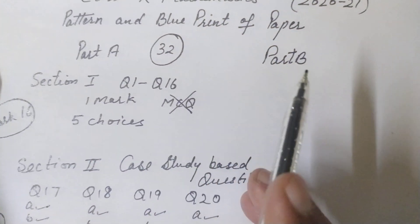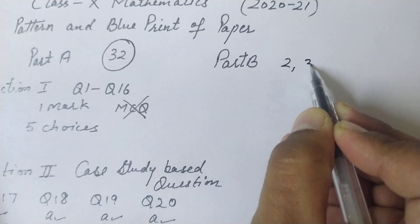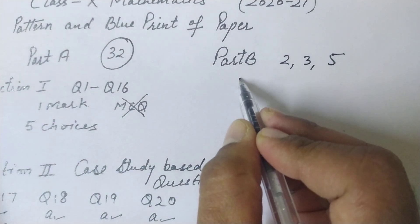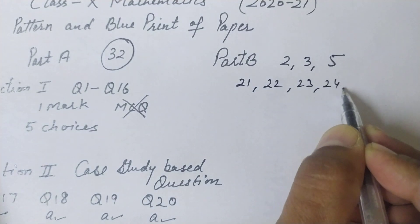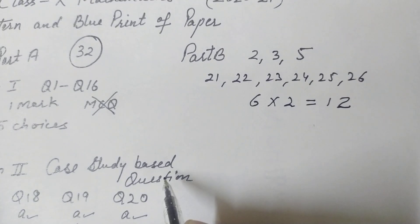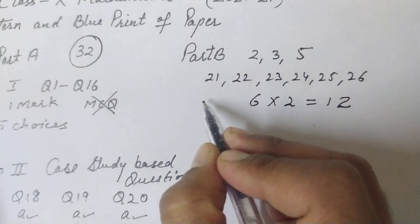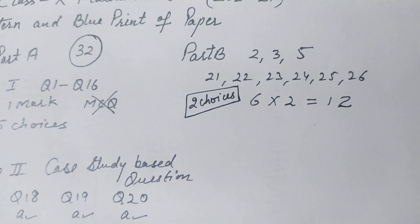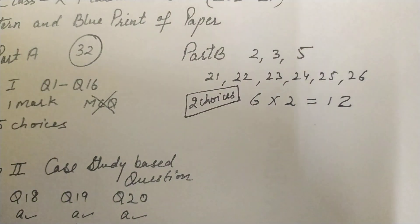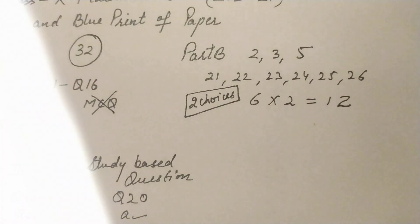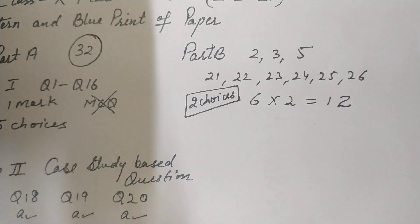In Part B, there are two-mark, three-mark, and five-mark questions. The first six questions of Part B — questions 21 to 26 — are two marks each, totalling 12 marks. Two internal choices are given among these six questions.